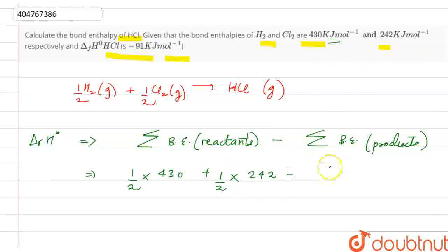Minus. We have to calculate this, because HCl has asked for bond enthalpy, so we have to write bond enthalpy, let's suppose x and this value given is minus 91.